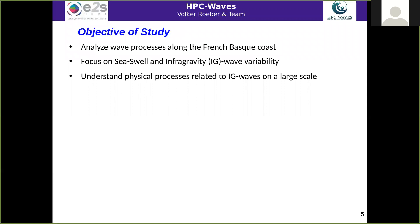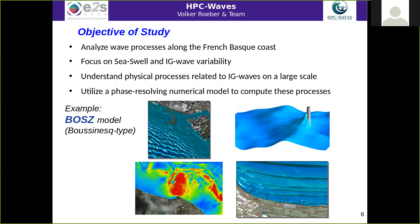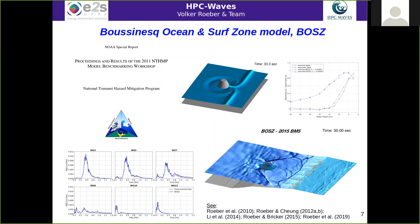To do that we utilize a phase-resolving numerical model to compute these processes. In this example we use the BOSS model, which is a Boussinesq-type model developed within the chair. The model has been extensively validated and verified with experiments and benchmarked in multiple studies, so we're just using the model in the best way possible to derive and analyze data from it.